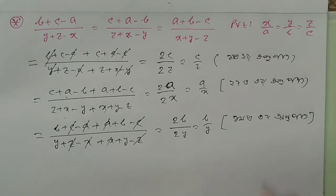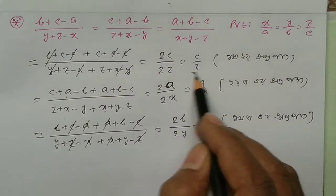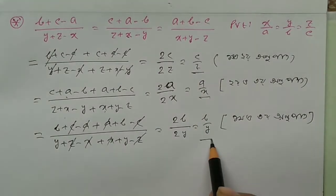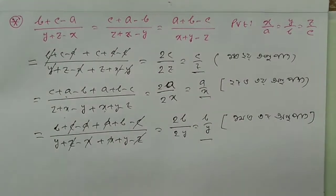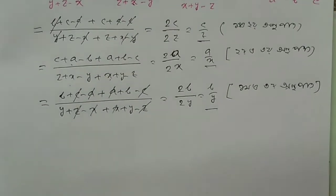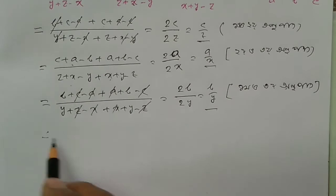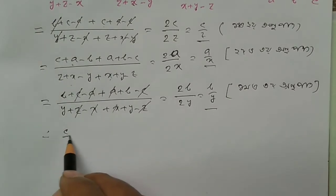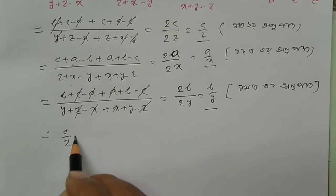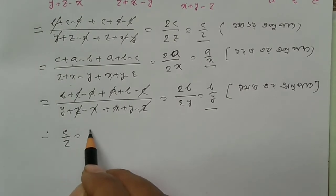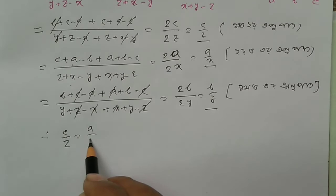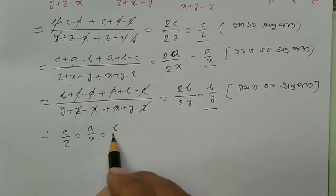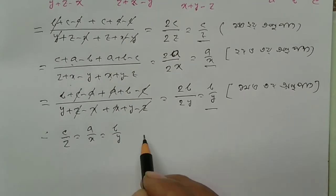Therefore, C by Z equals A by X equals B by Y.